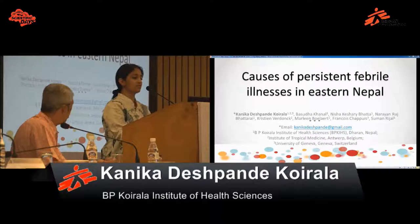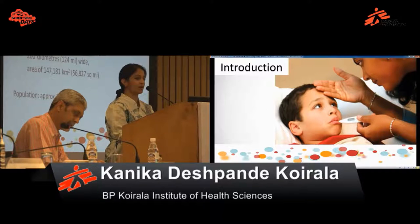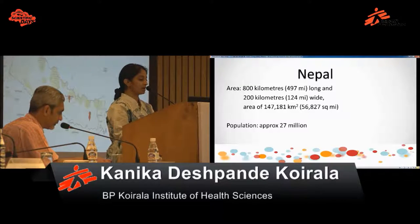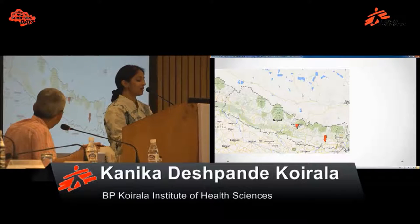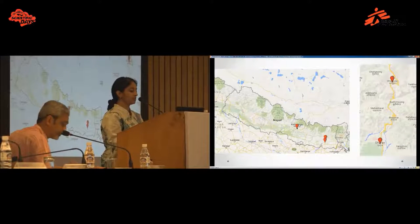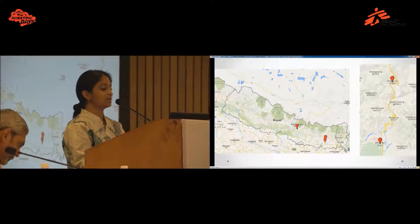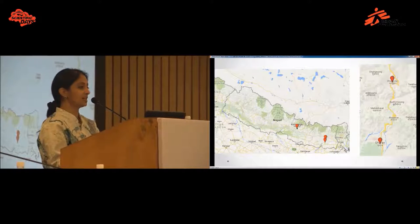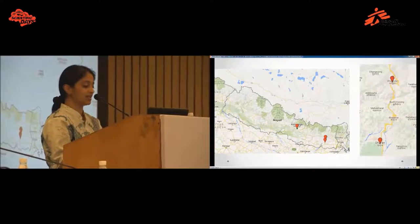The topic is the causes of persistent febrile illness in the eastern part of Nepal. Nepal covers an area of around 147,000 square kilometers with a population of approximately 27 million. On the map of Nepal, the red spot in the center is Kathmandu, the capital. The two red spots to the eastern side are where the study was conducted: Dharan and Dhankuta. We chose these two centers because they are in the eastern side and have different topography. Dharan is more toward the plains and Dhankuta is more toward the hilly side, which is evident in the results, as the presentation of patients and the diagnoses found were different in both regions.